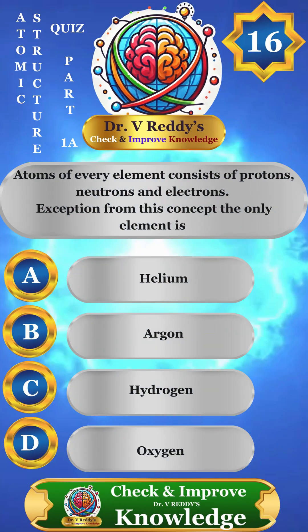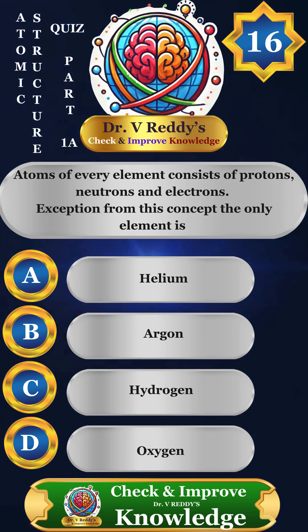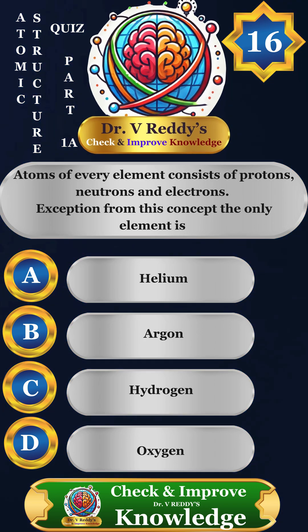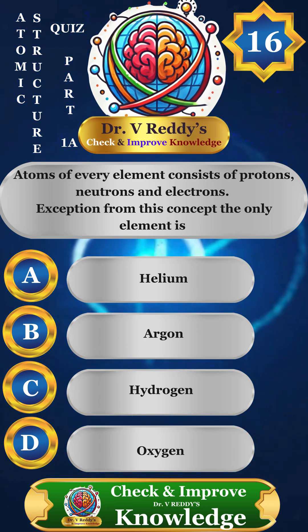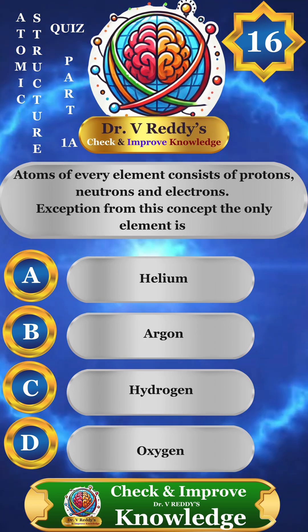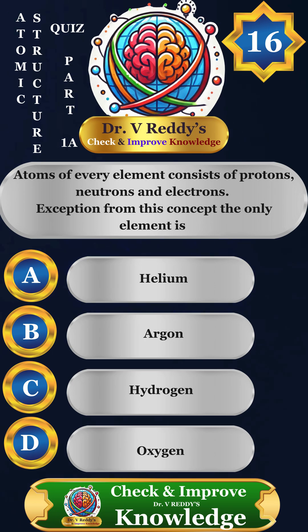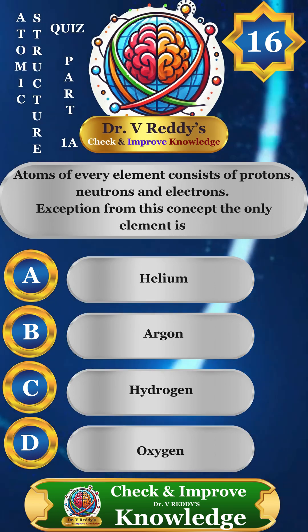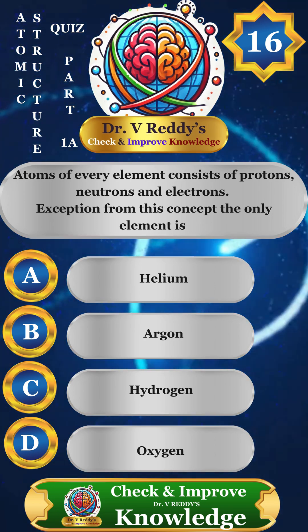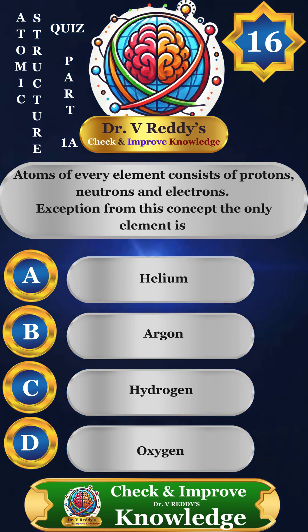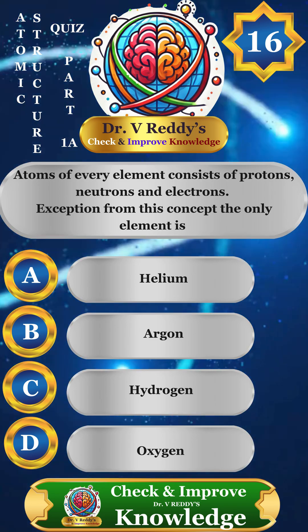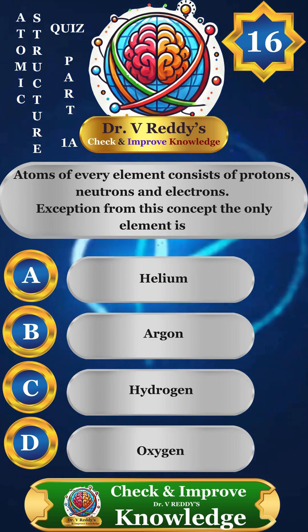Question 16: Atoms of every element consist of protons, neutrons and electrons. The exception to this concept is only one element. A. Helium, B. Argon, C. Hydrogen, D. Oxygen.